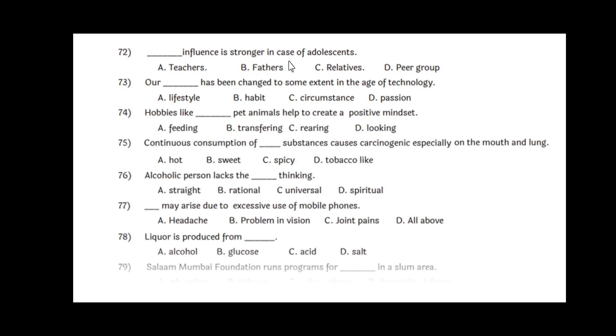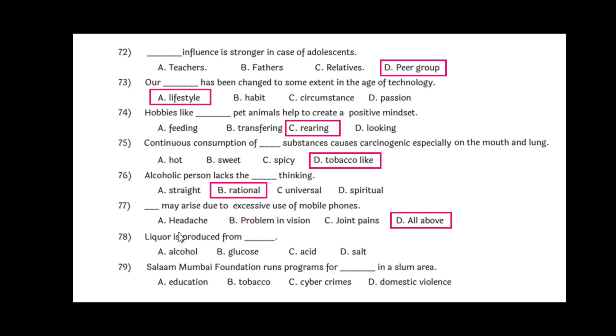Question 72: Dash influence is stronger in case of adolescents, and that option is peer group, option D. Question 73: Our dash has been changed to some extent in the age of technology, that is lifestyle, option A. Question 74: Hobbies like dash pet animals help to create a positive mindset, and that option is rearing, option C. Question 75: Continuous consumption of dash substances causes carcinogenic effects, especially on the mouth and lung, that is tobacco-like substances, option D. Question 76: Alcoholic person lacks dash thinking, that is rational thinking, option B. Question 77: Dash may arise due to excessive use of mobile phones, and the option is all of these: headache, problems in vision, and joint pains. All will be caused.